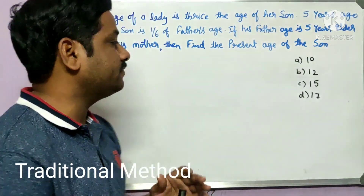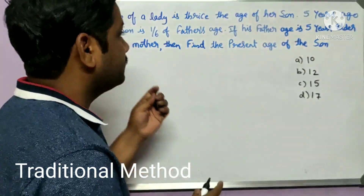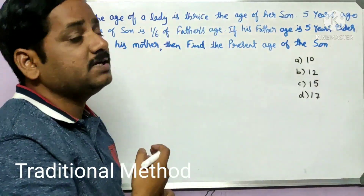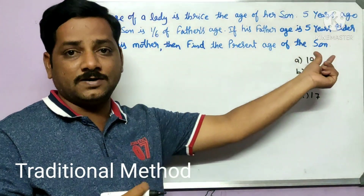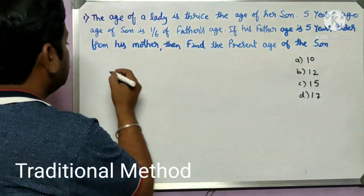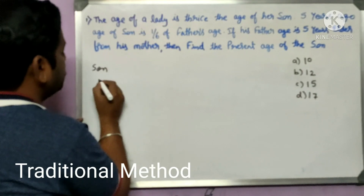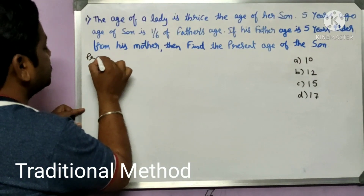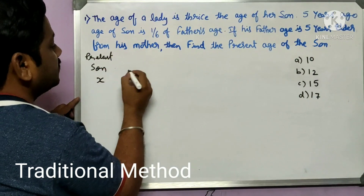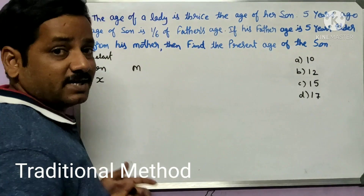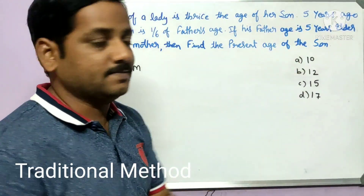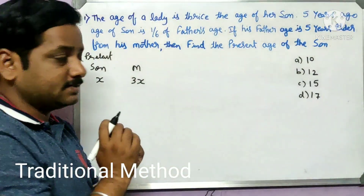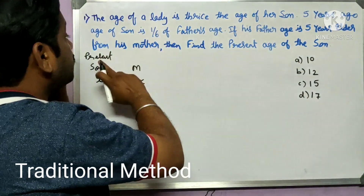Traditionally, we need to get enough expressions. Look at the statement: the age of a lady is thrice the age of her son, and we need to find the age of the son. Let us consider the present age of the son as x. So the mother's age will be three times x, that is 3x.